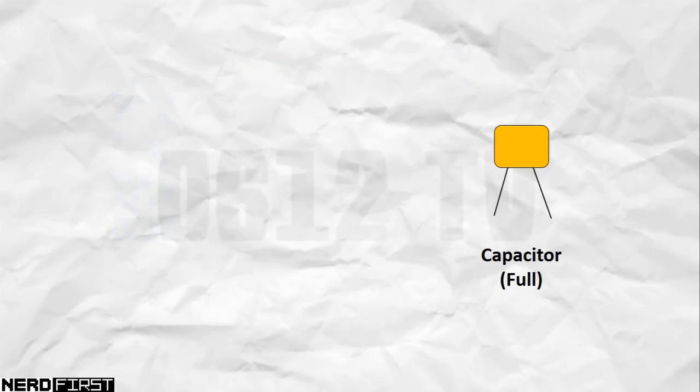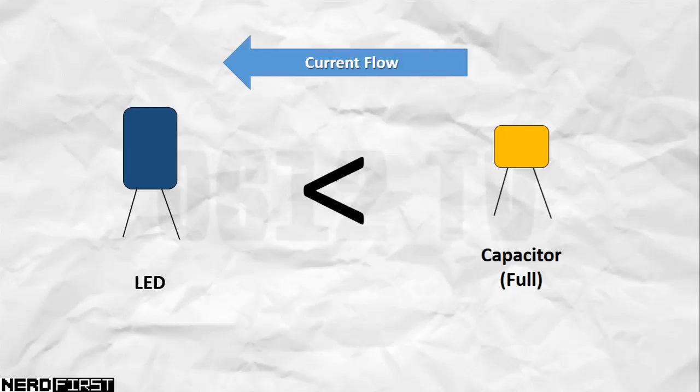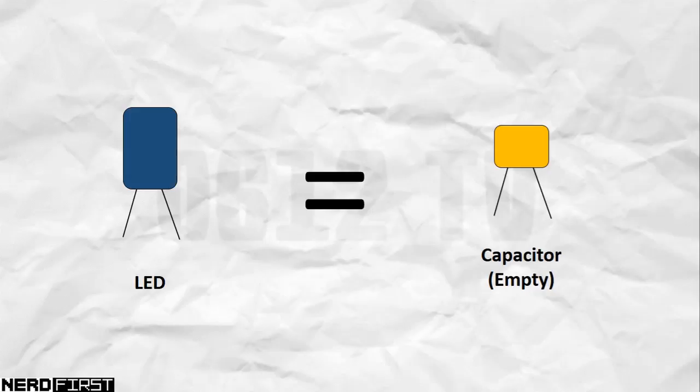Let's now remove the power source and bring along an LED instead. The stronger party here is our capacitor, and as a result, current now flows from the capacitor towards the LED. That causes our LED to light up for a fleeting moment, as long as our capacitor is full. Once our capacitor is depleted, the LED will no longer light up, and there will no longer be a movement of charge.